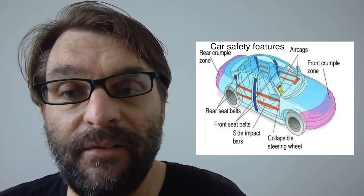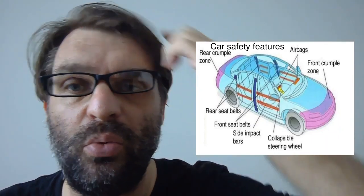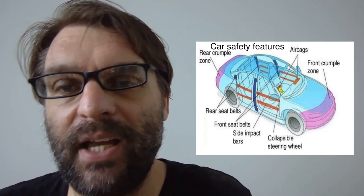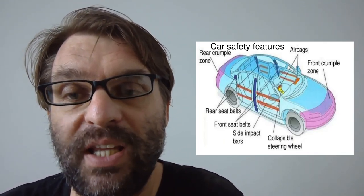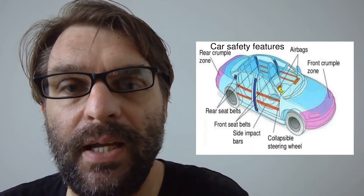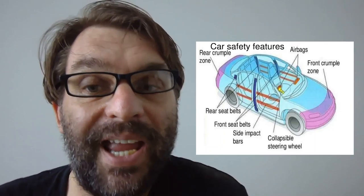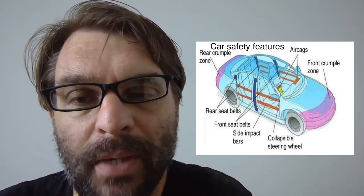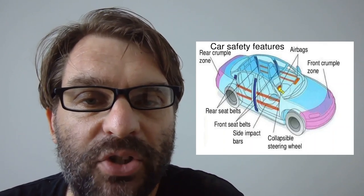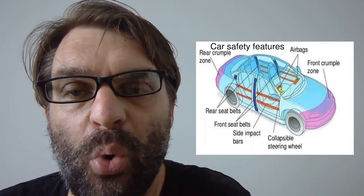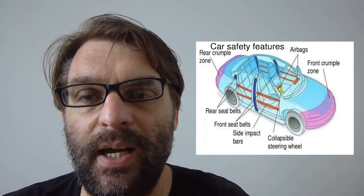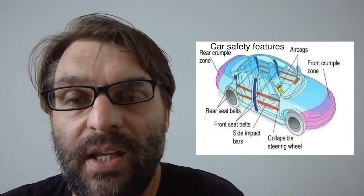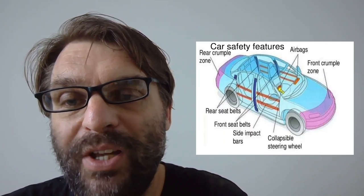This can be linked to car safety features, because car safety features are designed to reduce the force that the driver experiences over a time period. The idea is to increase the amount of time it takes for that force to be experienced. Rear crumple zones, front crumple zones, and airbags are all designed to increase the amount of time in which that force — that change in momentum — is applied. Rear seatbelts, front seatbelts, side impact bars, and collapsible steering wheels are all designed to reduce the force a body experiences by increasing the time taken for that momentum change.